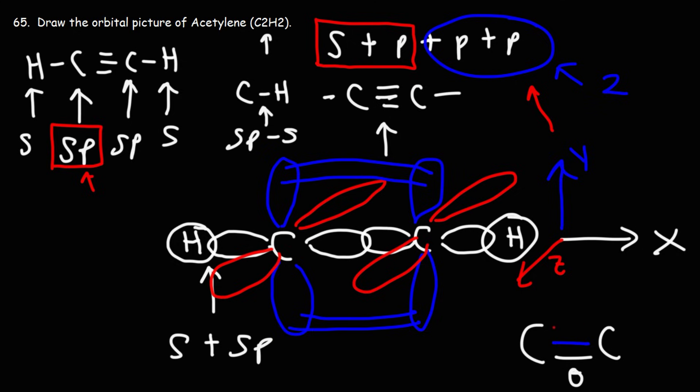The second pi-bond in red - there's an overlap along the z-axis. It's parallel to the x-axis, but the orbitals extend along the z-axis.